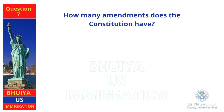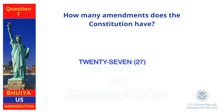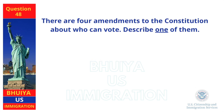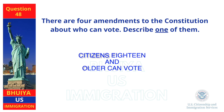How many amendments does the constitution have? There are four amendments to the constitution about who can vote — describe one of them. Citizens 18 and older can vote.